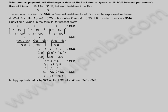Multiplying both sides by 343, which is the LCM of 7, 49, and 343: 294X plus 252X plus 216X is equal to 9144 into 343. Solving, X is equal to 4116 rupees. The installment which will discharge the debt of 9144 rupees at 16 and 2 by 3 percentage in 3 years is 4116 rupees.